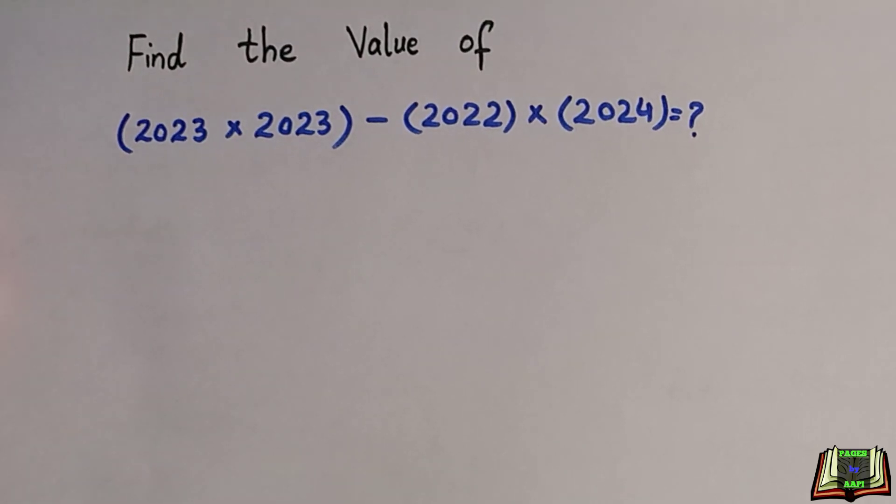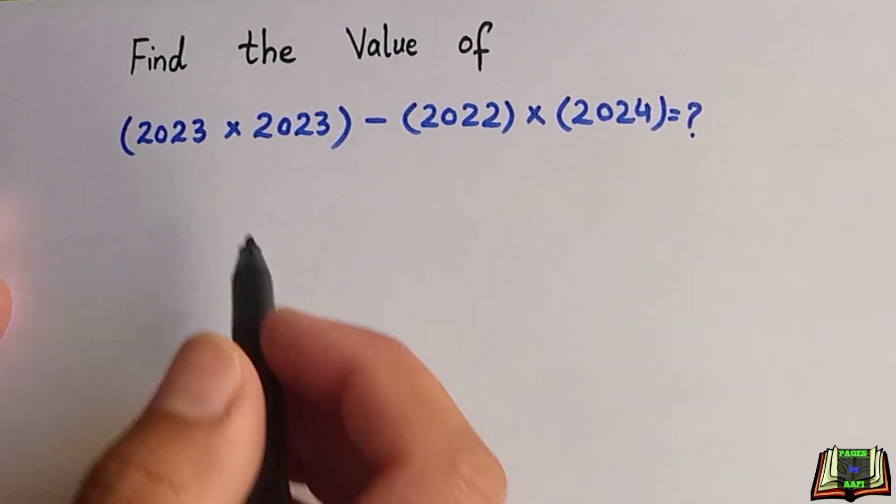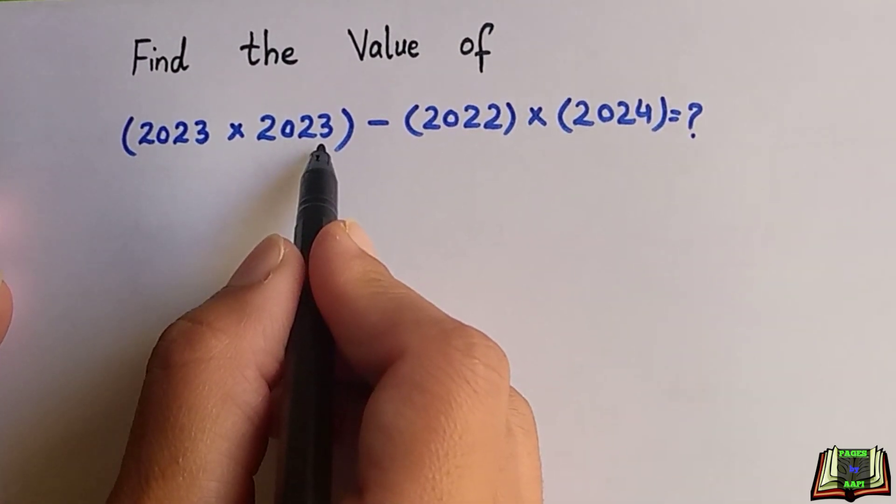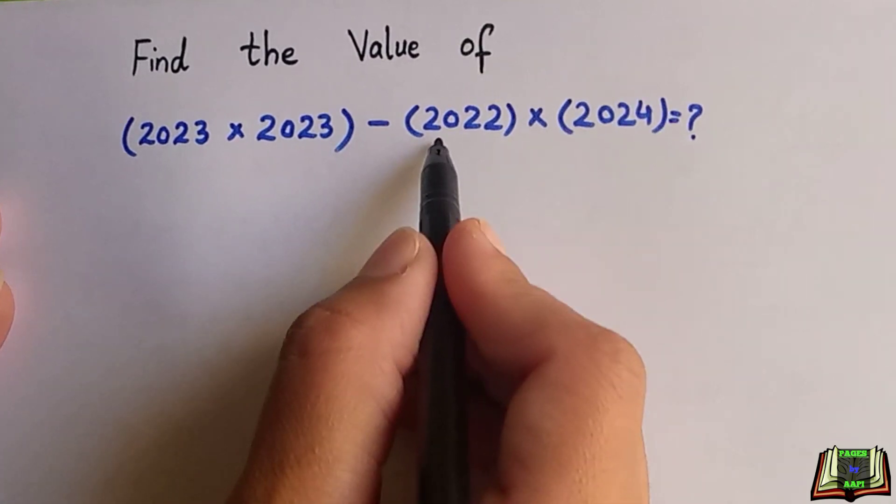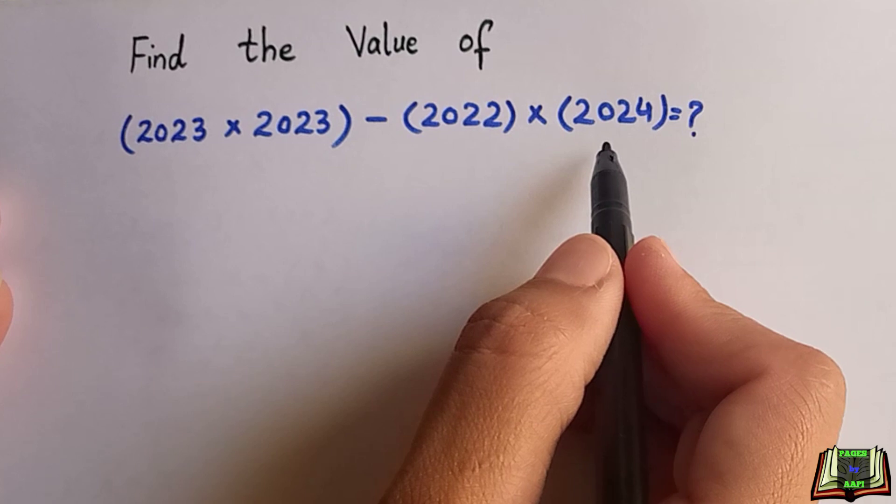Welcome all of you. We are not allowed to use the calculator and we have to find the value of this big number, that is 2023 times 2023 minus 2022 times 2024. So let's see the solution and how we can solve it.